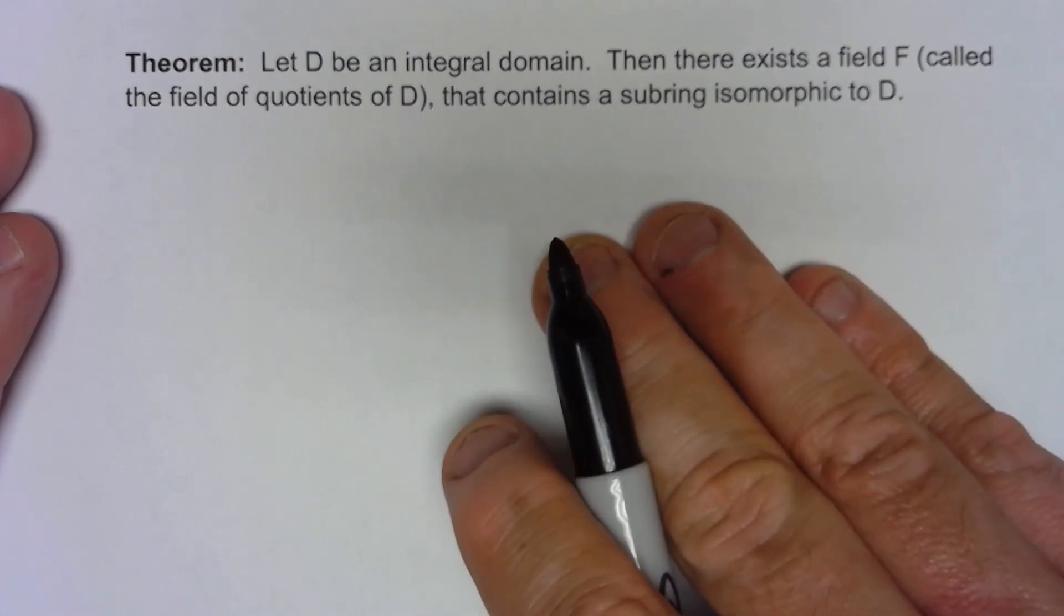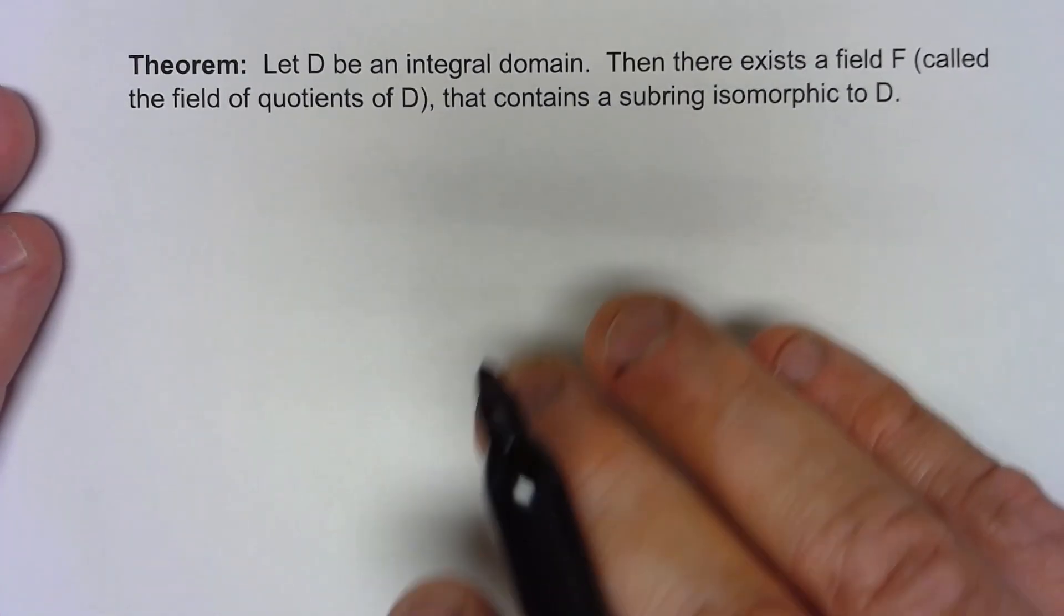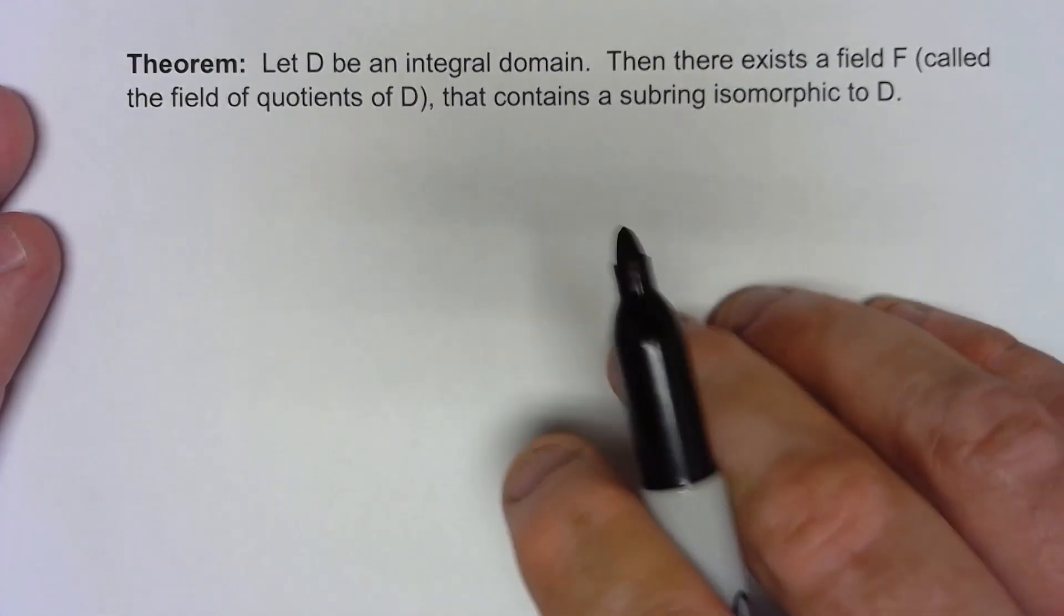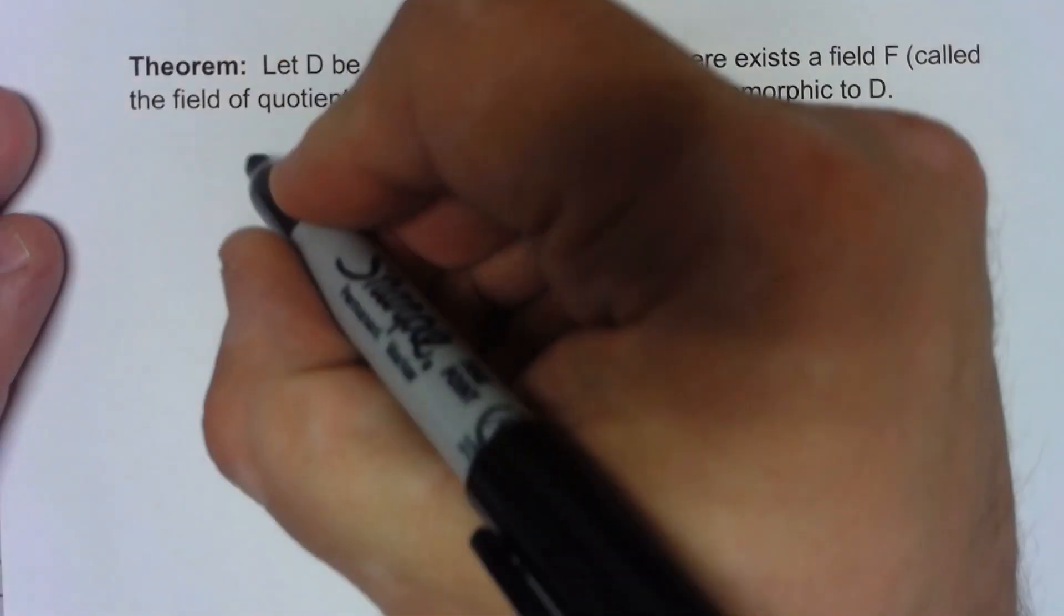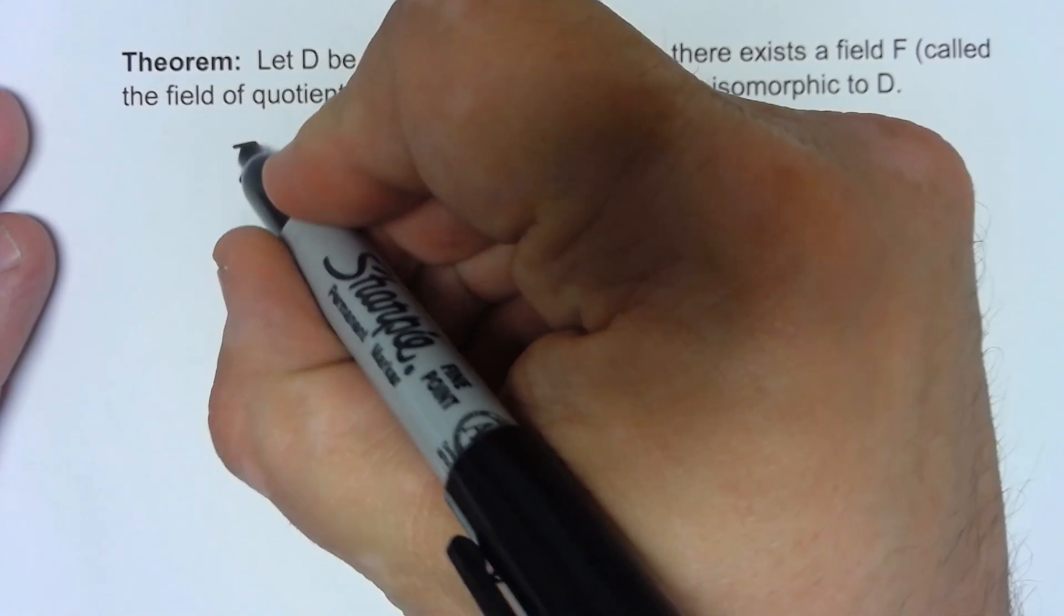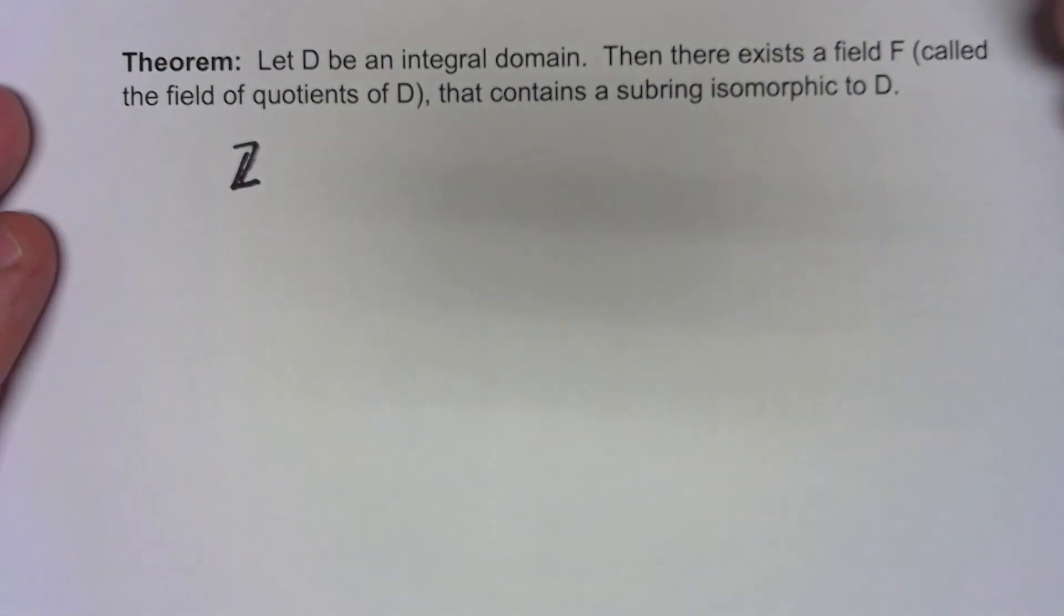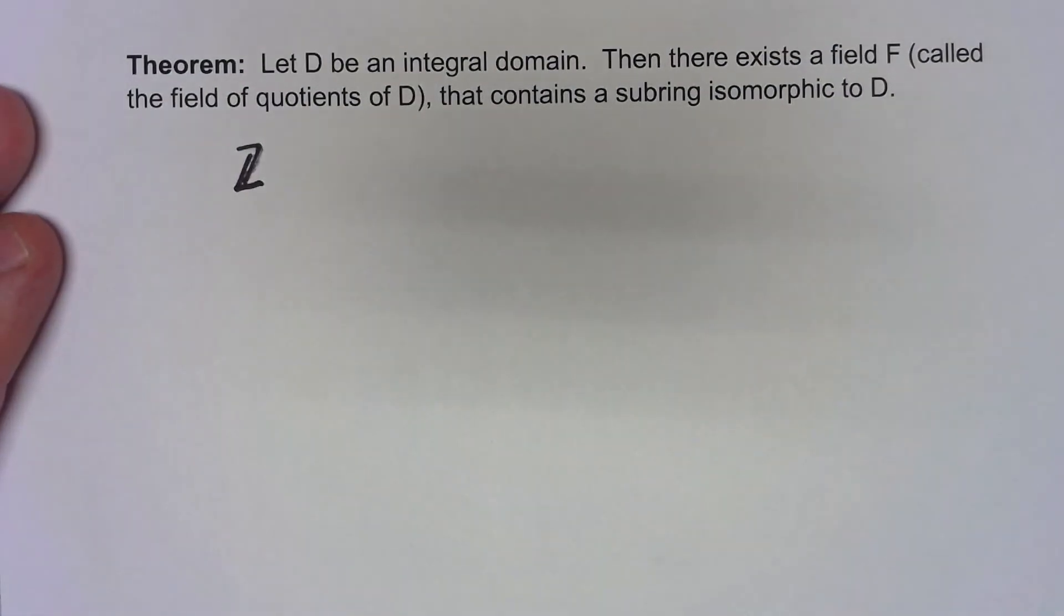The whole idea of this is very much like constructing the rational numbers out of the integers. So let's remember how that works. If you've got the integers, that's actually an integral domain because it doesn't have any zero divisors and it's a ring.